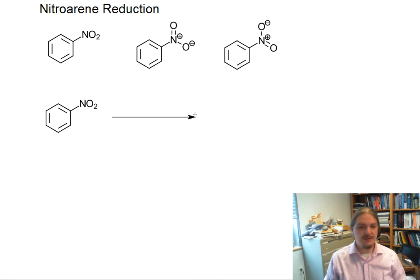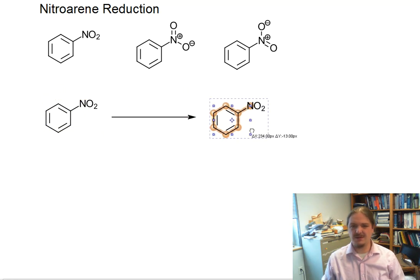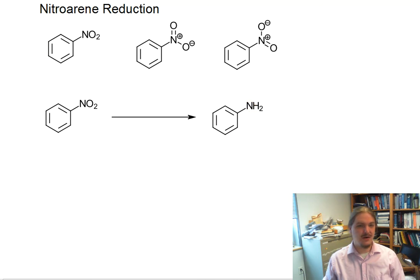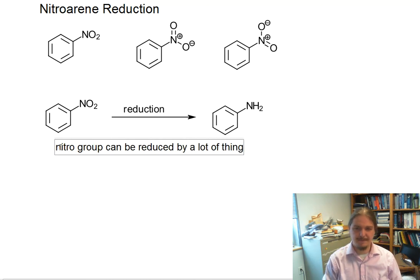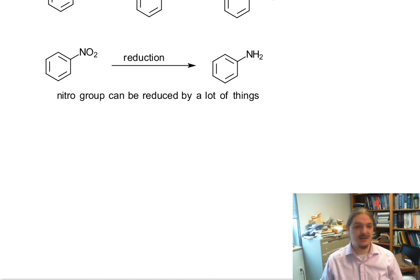The most common reduction of a nitro group, and this can generally be done on aliphatic, so non-aromatic nitro compounds as well, is reduction to the amine. And the nitro group is actually really easy to reduce, so the nitro group can be reduced by a lot of different reducing agents.